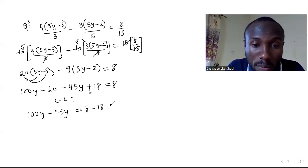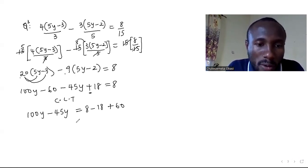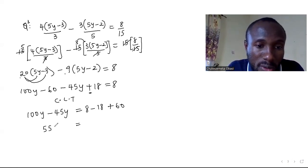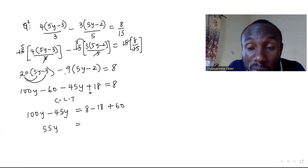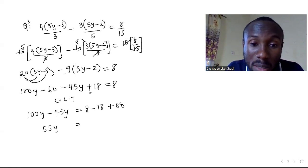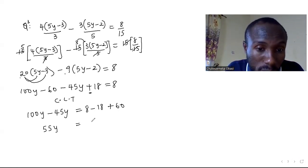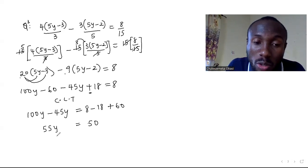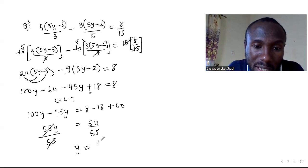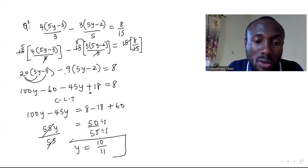100y minus 45y gives 55y. Then 8 minus 18 is minus 10, and minus 10 plus 60 gives 50. So 55y equals 50. Divide both sides by 55. Simplify by dividing by 5: 50 over 5 is 10, and 55 over 5 is 11. So y equals 10 over 11. That's the value of y for question 3.